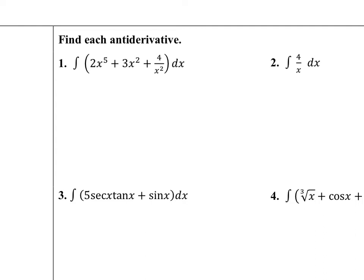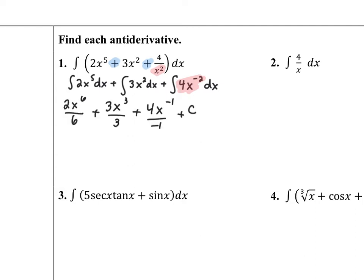First, I'm going to apply the integral property that says I can do the antiderivative of each term separately across the plus signs. You don't have to write three separate integrals, but I want you to recognize that integral property in action. The only change besides separating it out is that when x squared appears in the denominator, that required a rewrite with a negative exponent. Now I apply the power rule — add 1 to the power and divide by the new power.